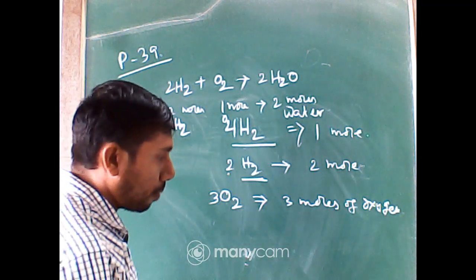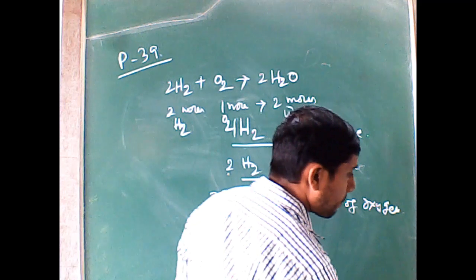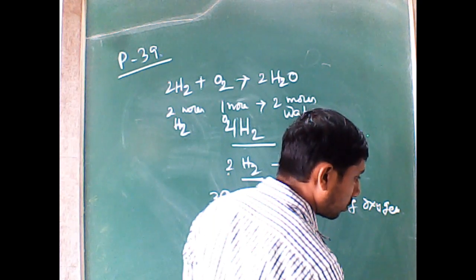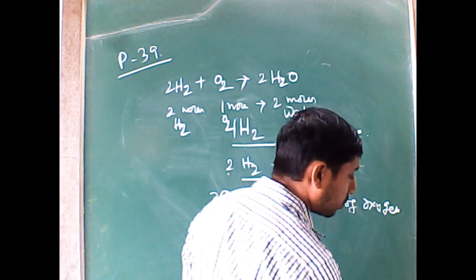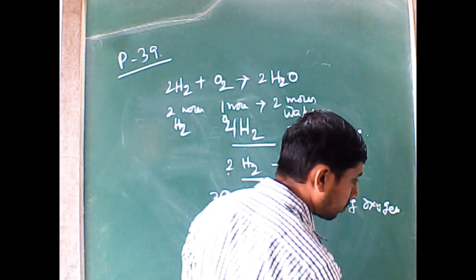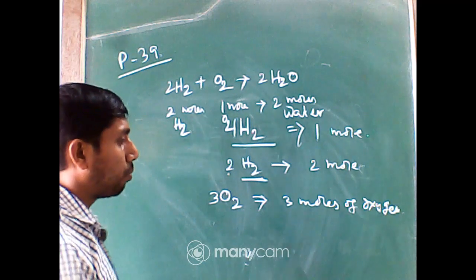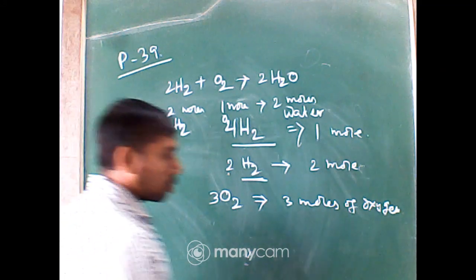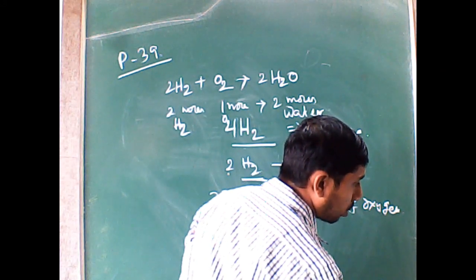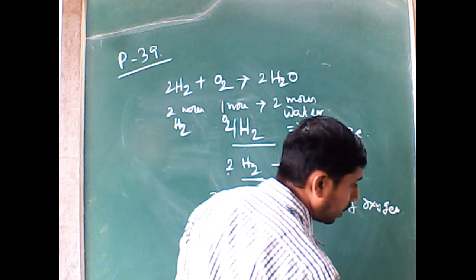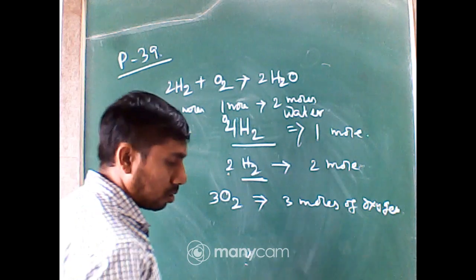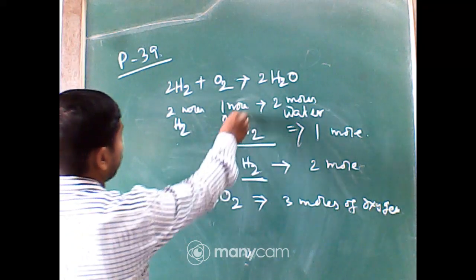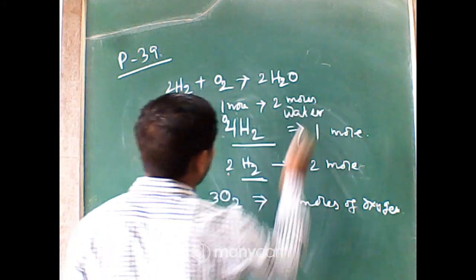Some students could not see the board properly, but it was confirmed that the board is totally visible. To recap: the general form is that 2 moles of hydrogen reacts with 1 mole of oxygen to produce 2 moles of water.